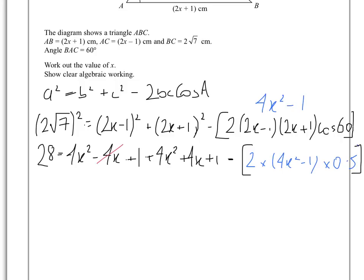So when we simplify that again, one of the things we'll see here is that will cancel with that, and when we simplify further, we're going to get 28 equals 8x squared plus 2 minus, and then that inside bracket bit will become 4x squared minus 1, because essentially the 2 will cancel with the half, which obviously is 1 over 2, so that 2 will cancel with that, so that half would essentially go, so you'd just be left with 4x squared minus 1.